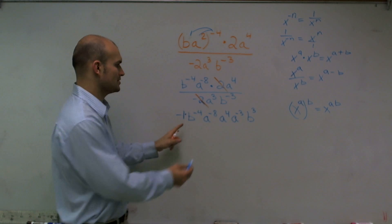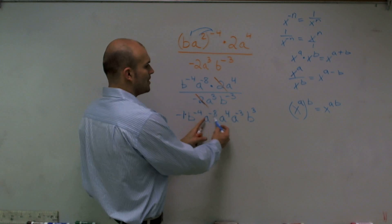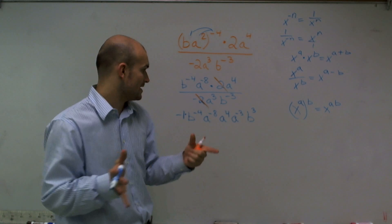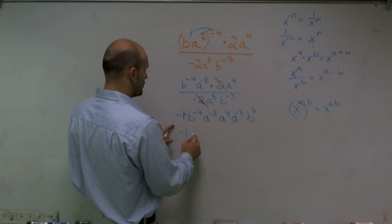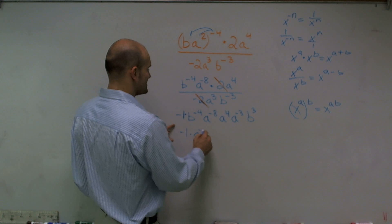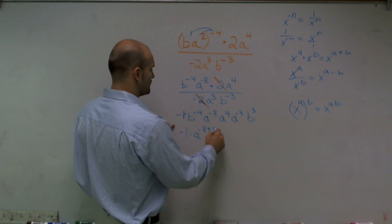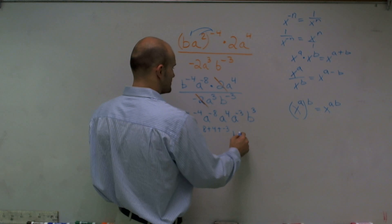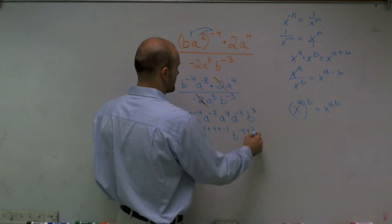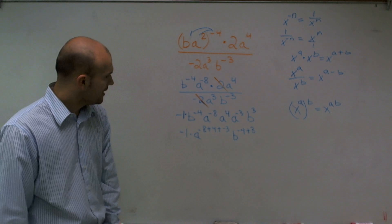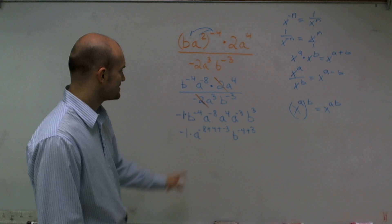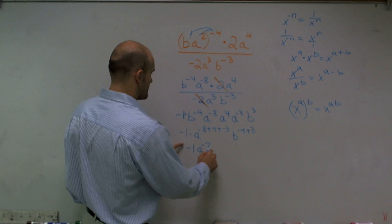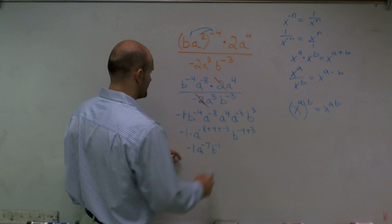Now, what I'm simply going to do is I'm going to combine these. I notice that I'm multiplying all these together, and I'm multiplying my two b's. So remember, when you multiply, you're just going to simply add. So I have negative 1 times a to the negative 8 plus 4 plus negative 3. And then b to the negative 4 plus 3. And when you add this up, what you get is negative 1, a to the negative 7th, and b to the negative 1st.